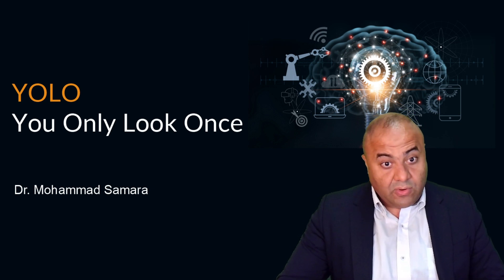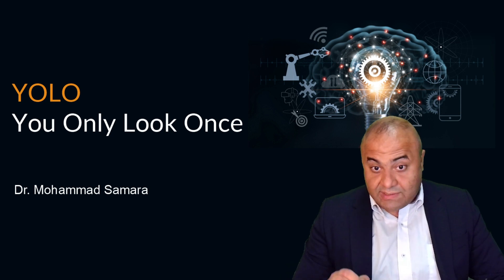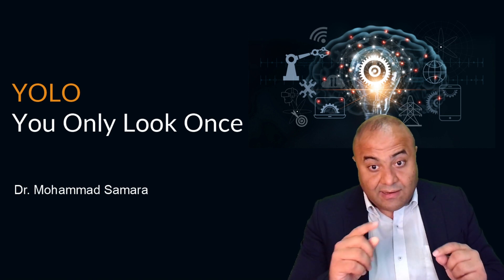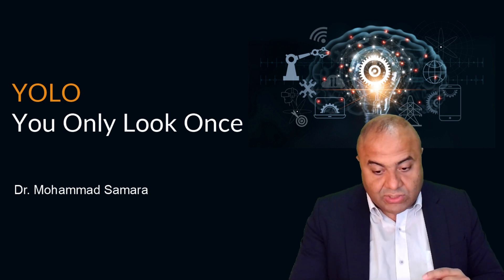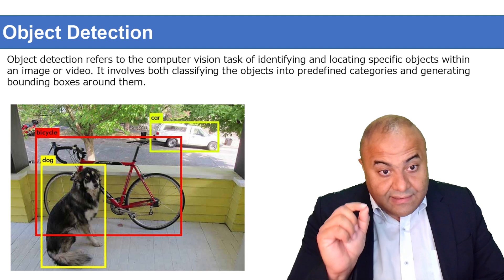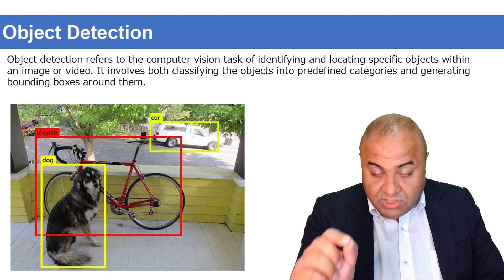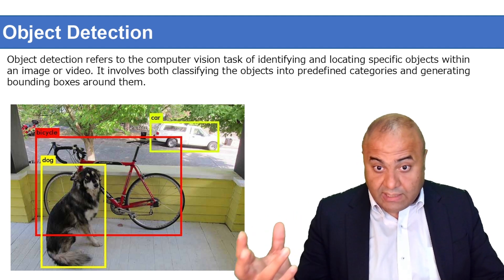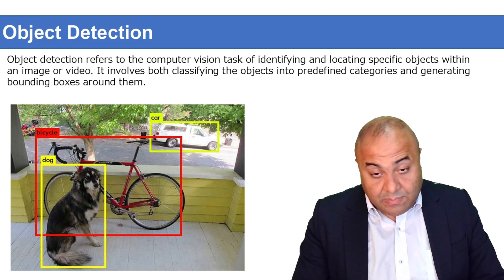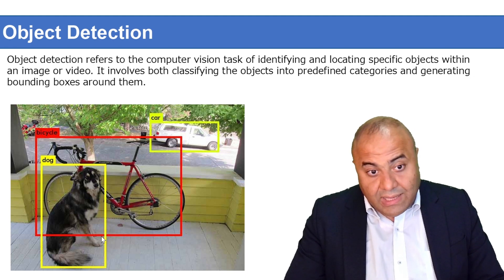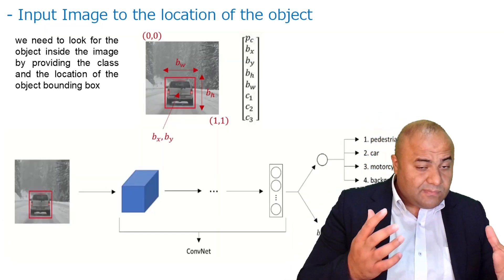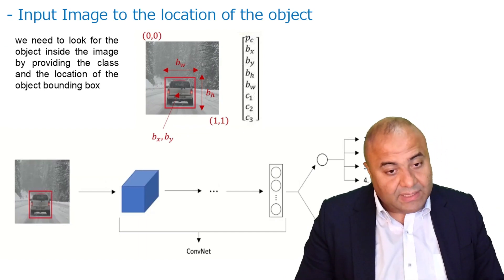Hello and welcome. YOLO — You Only Look Once. Let's try to understand how it works in a simple way. We need to understand exactly how it gives the final bounding boxes for detecting objects in an image. Object detection is basically understanding what object we're looking at in an image — whether it's a dog, bicycle, or car — and localizing it with a bounding box.